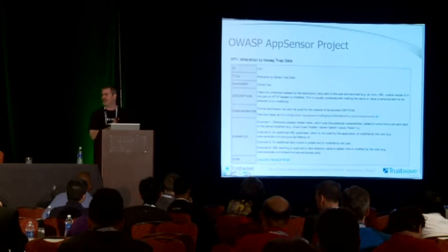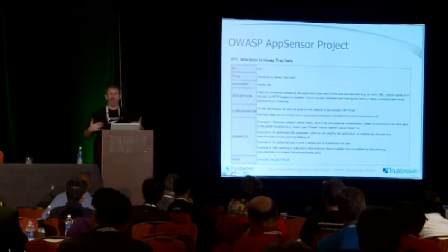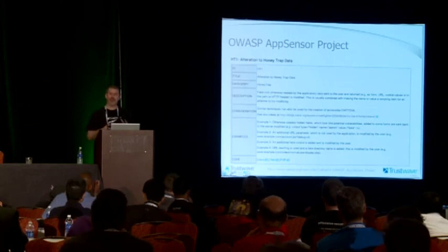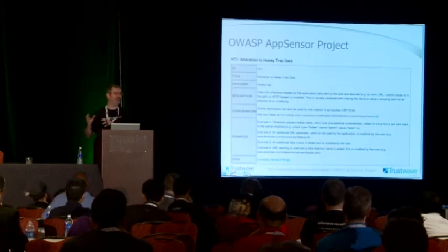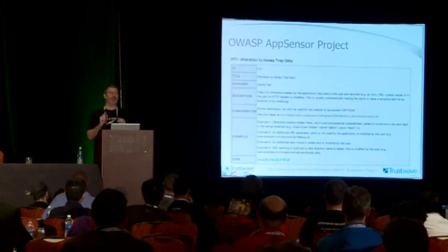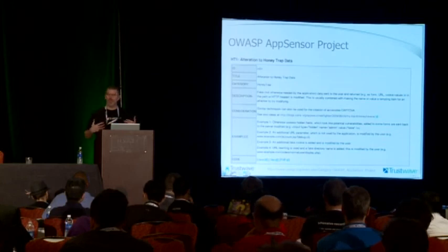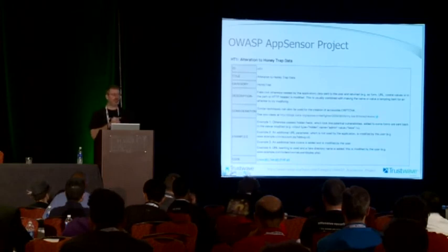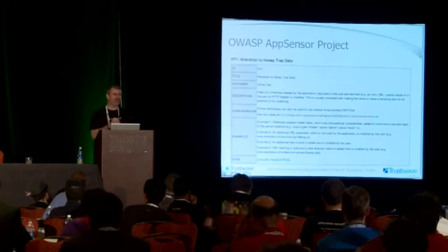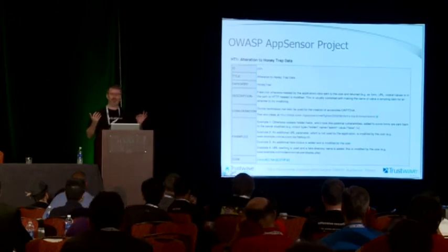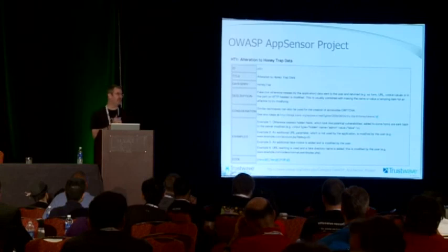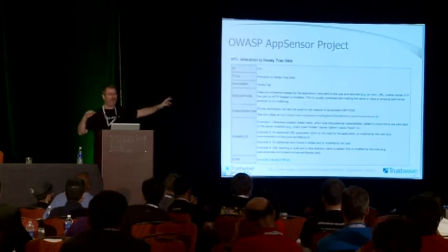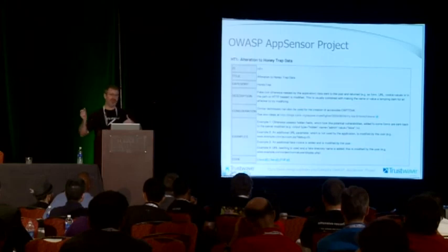AppSensor is a project I also contribute to. There's a section talking about alteration of honey trap data. A honey trap is different from a honey pot — honey pots are totally separate servers or VMs you redirect traffic to. With a honey trap, the user is actually interacting with your real web application. We want to alter some of the HTML going back to the client and seed it with deception points and traps: if somebody messes with this, we know they're up to no good because a regular user would never touch it. Essentially zero false positives.